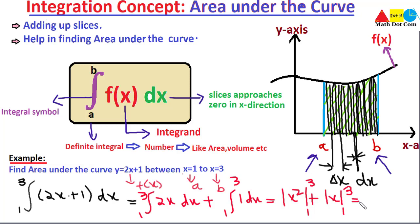We put in the values as upper limit minus lower limit. For x²: 3² = 9 minus 1² = 1, giving 8. For x: 3 minus 1 = 2. Adding these: 8 + 2 = 10. So the area under the curve is 10. This is how we use the concept of the definite integral for area under the curve — we get a definite single value at the end, not a function.